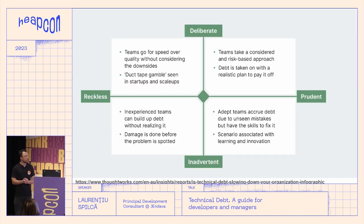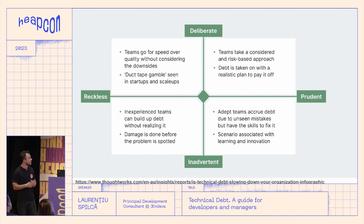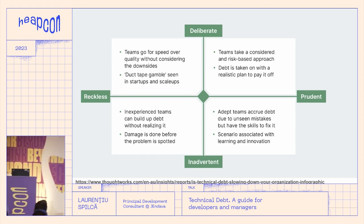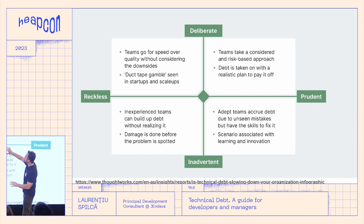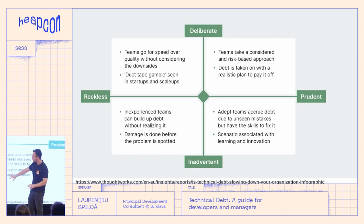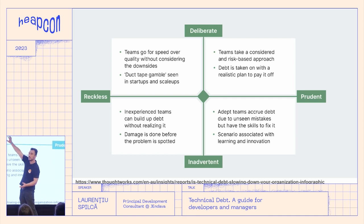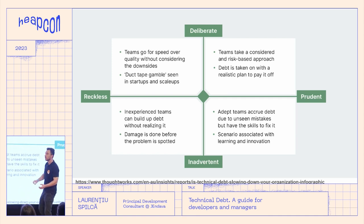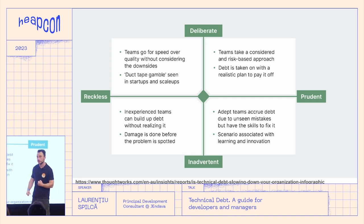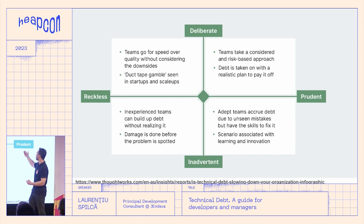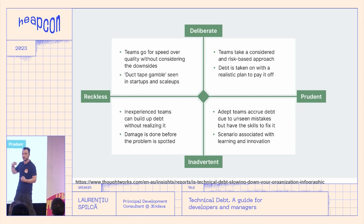We ended up with a working MVP and a lot of technical debt. But I told them from the very beginning: the next thing you let me do after the MVP is addressing that technical debt. Fortunately, they understood, and we trusted each other. When dealing with technical debt, you can choose different perspectives — you can deliberately leave technical debt, or not be aware when you leave it. You can be reckless with a good economic reason, or you can be very prudent.